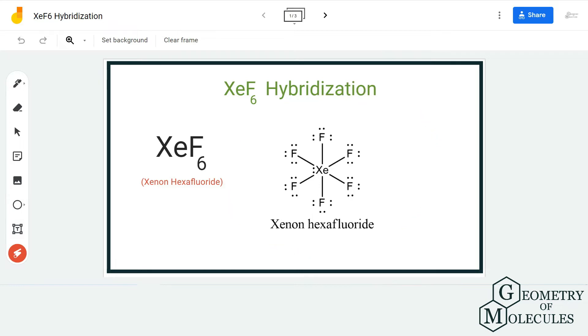look at its Lewis structure. So this is the Lewis structure of XeF6 molecule in which xenon atom is forming six bonds with six fluorine atoms. Apart from that, it also has one lone pair of electrons because it can have expanded octets.